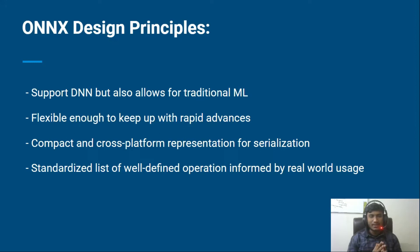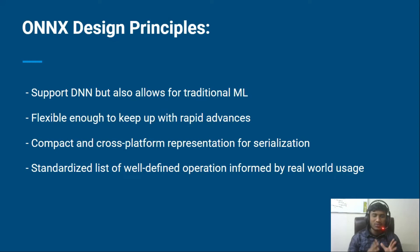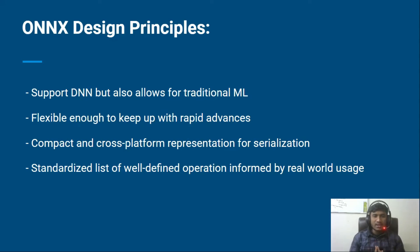ONNX is also flexible with rapid advances. As you already know, TensorFlow, PyTorch, Keras, and scikit-learn are the frameworks we use in our deep learning or machine learning solutions. They are being upgraded continuously. So for tracking those versions, ONNX is also flexible enough because it tracks each and every update of your framework and upgrades itself accordingly. That is why it has become very popular across every framework.